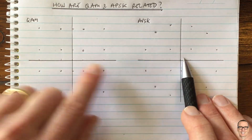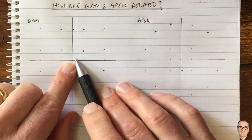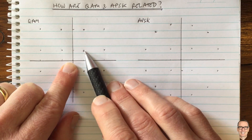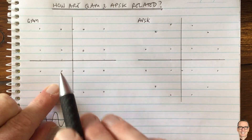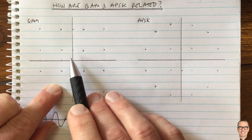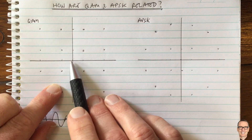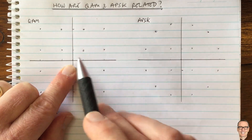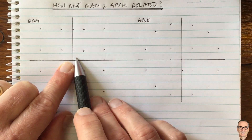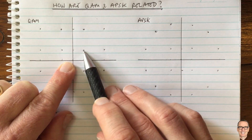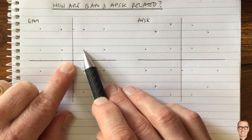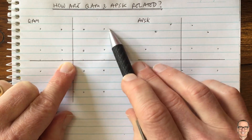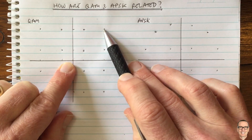In both cases, we have points that have varying different amplitudes and phase. For example, all these four points in the middle have the same amplitude, but they have different phases. In the QAM case, we have three different possible amplitudes: the amplitude to this inner point, the amplitude to this point here, and the amplitude to this outer point.